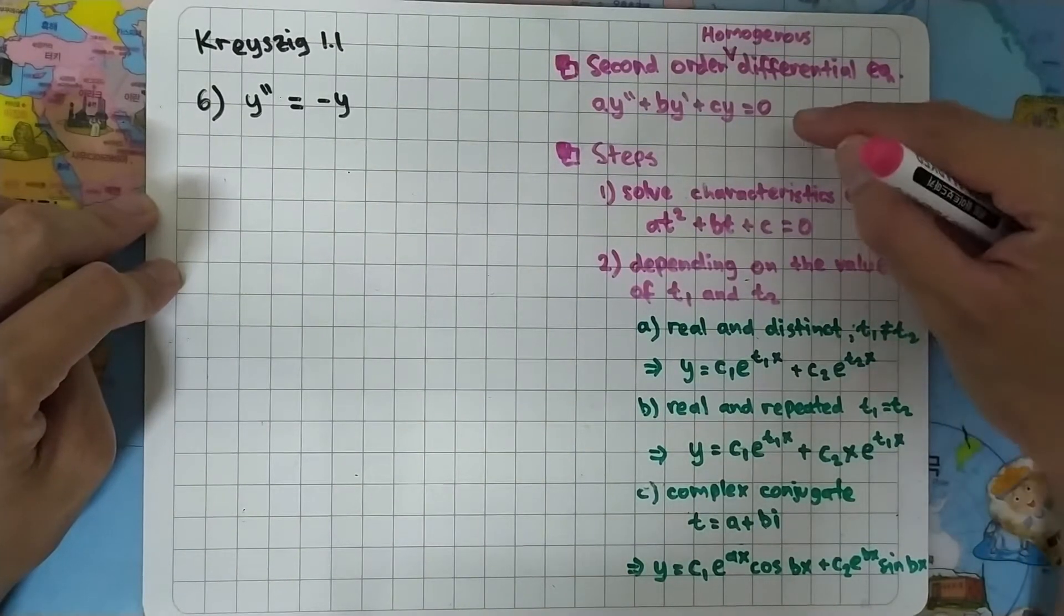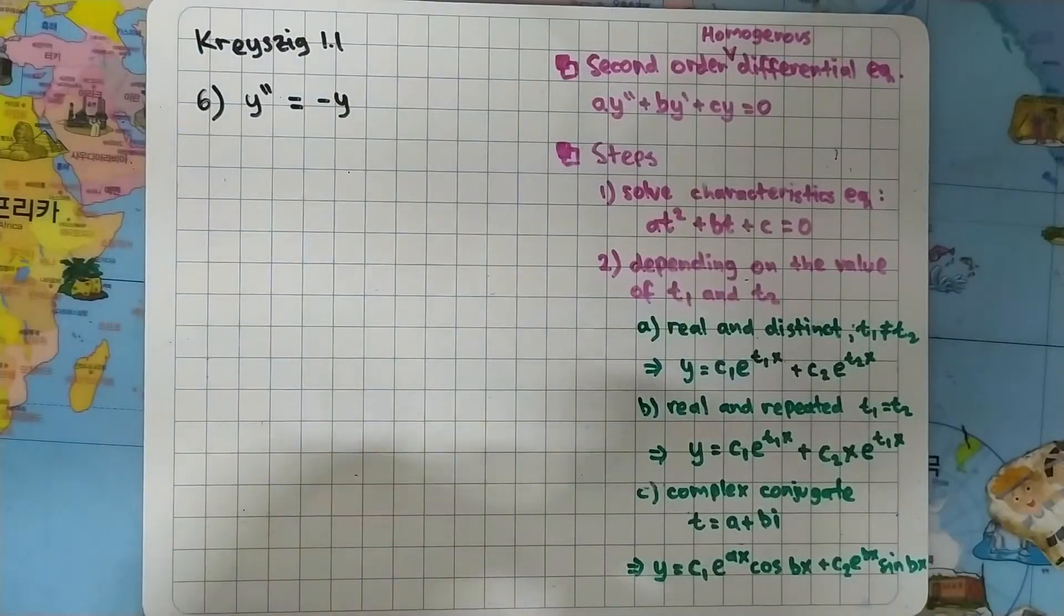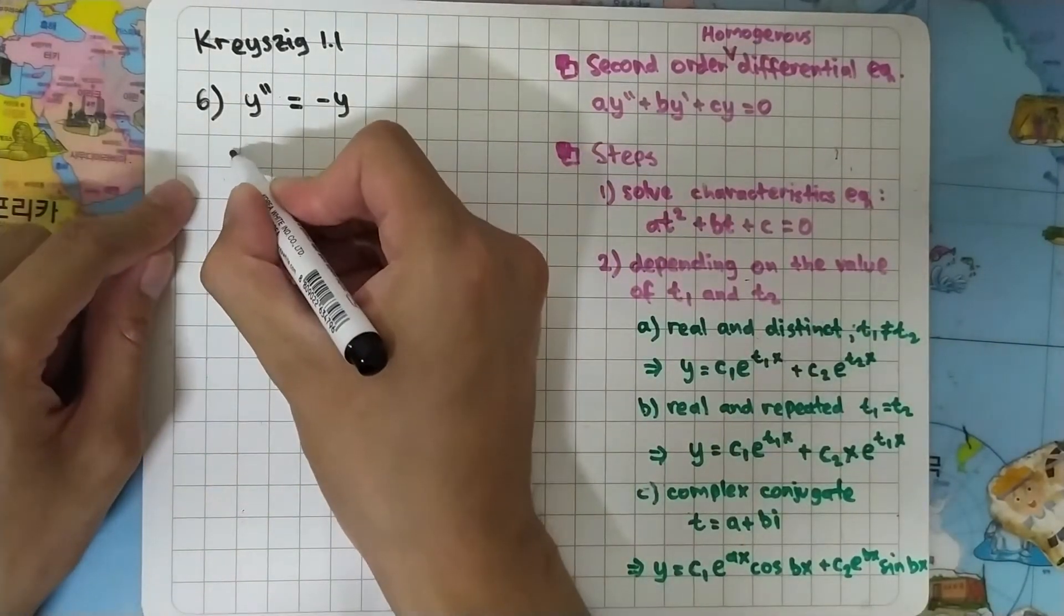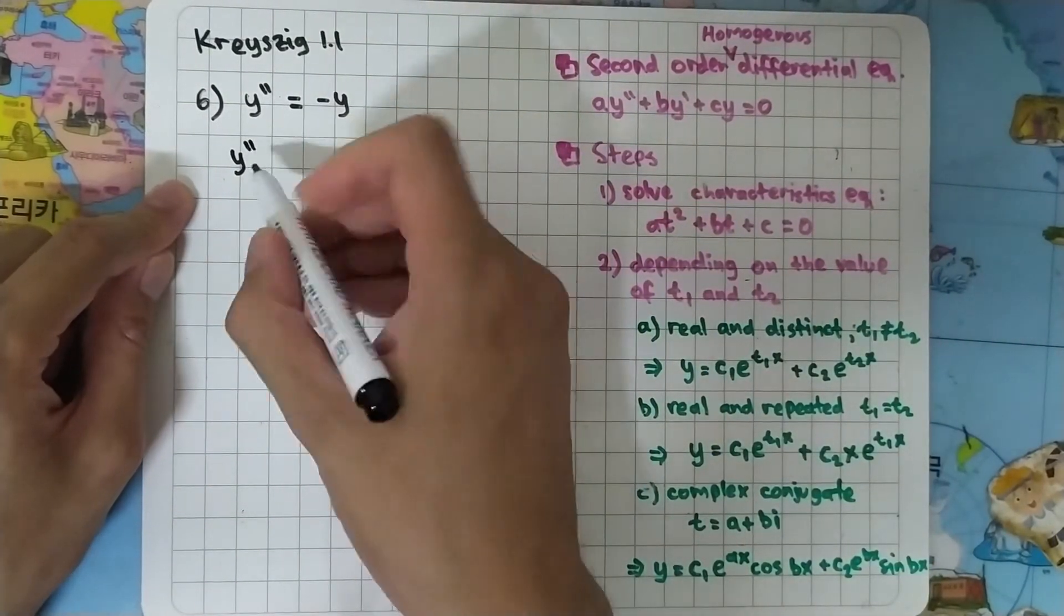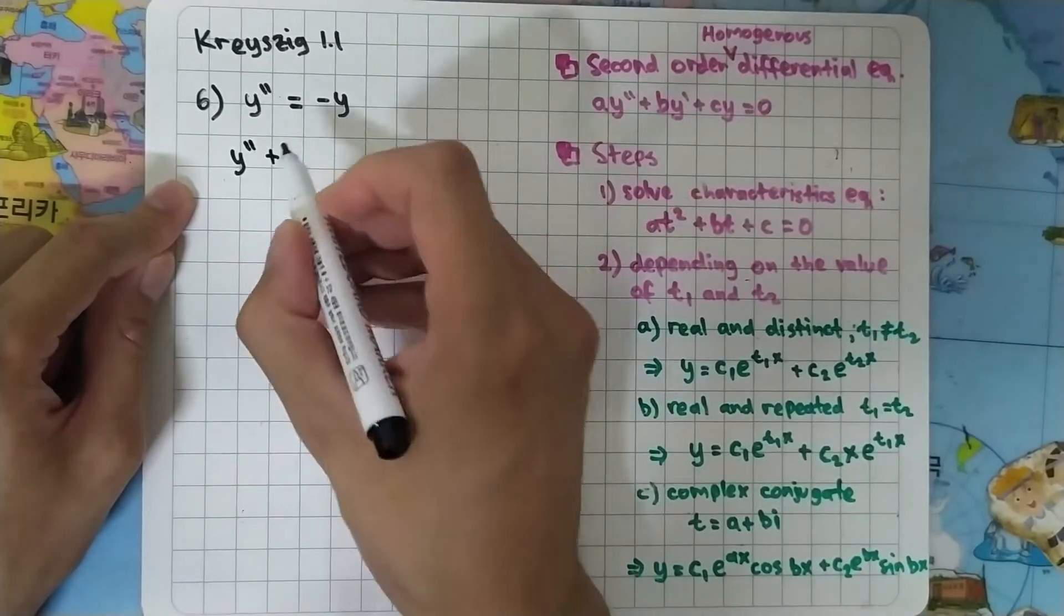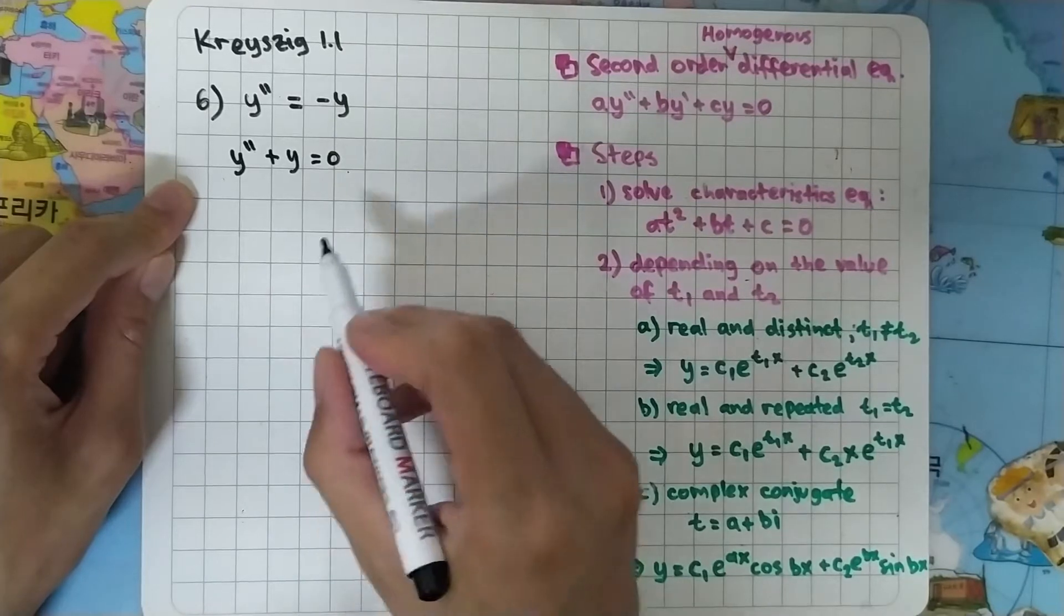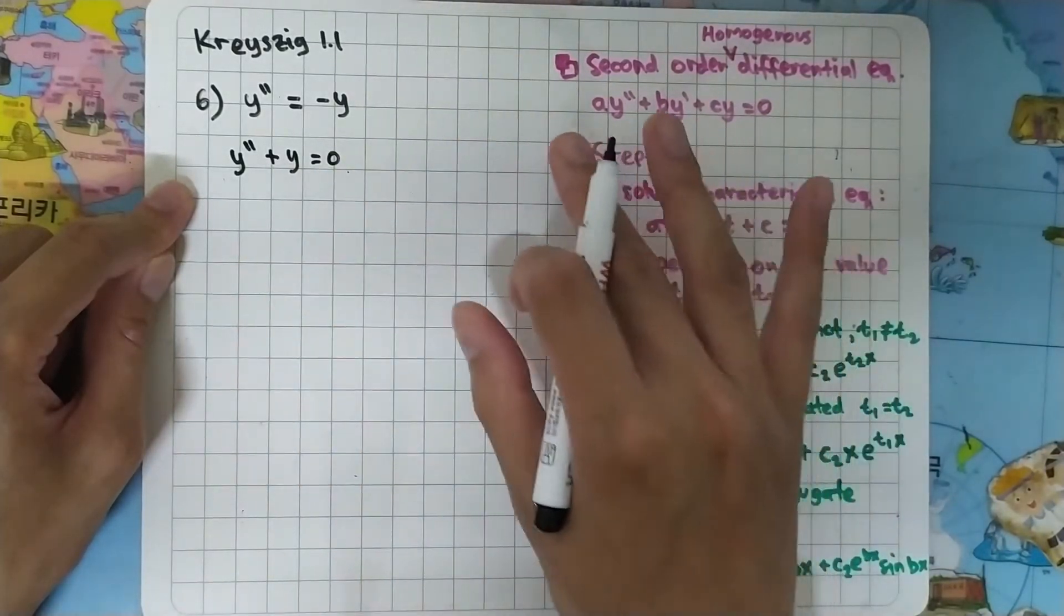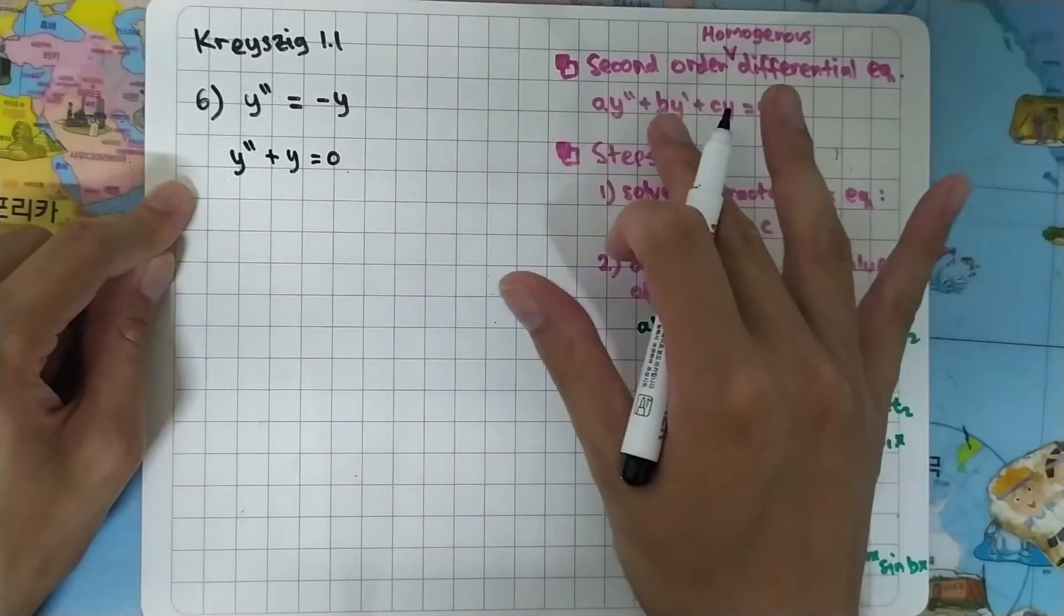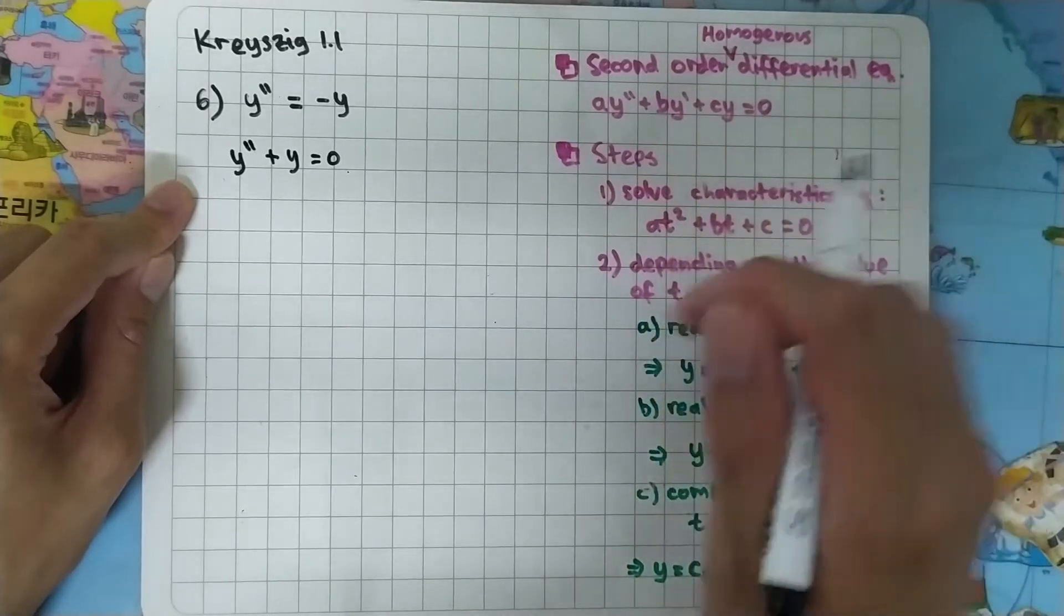If we rewrite this as y double prime plus y equals zero, we will have a equals one, b equals zero, and c equals one.